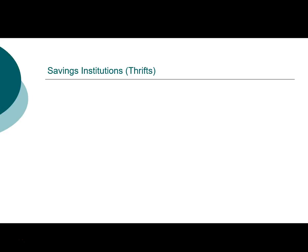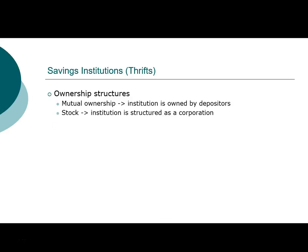Savings institutions are actually very similar to banks — they are thrifts and they have served a very important function. One thing that is distinct about savings institutions in contrast to banks is that some savings institutions are called mutuals, and they'll have the word 'mutual' in their name. Banks by definition are all stock-owned, meaning that banks are constructed as corporations. What distinguishes savings institutions or thrifts is that some of them are considered mutuals, and in the mutual ownership structure, the institution is owned by the depositors.